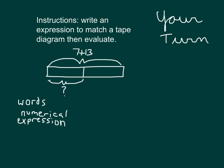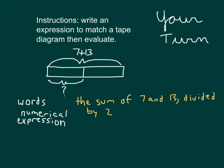What we're doing here is we have 7 plus 13. With the words, did you write out: the sum of 7 and 13? And in this case, it looks like we're dividing that sum of 7 and 13 by 2. We will place a comma there so that we know that we are taking the sum of 7 and 13, all of that, and dividing it by 2. Our numerical expression to match that would be 7 plus 13, in parentheses, dividing it by 2.